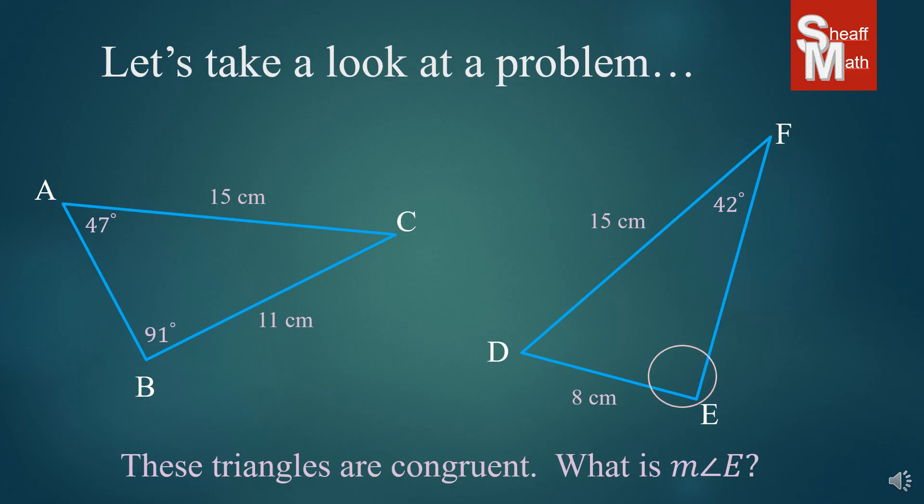So we're trying to find the measure of angle E. Now, some of you might just assume you can look at the other triangle and figure it out, and you may be correct. But you never want to trust your eyes in geometry. Always make sure mathematically that they are correct. So what I tell my students is, think of this as a puzzle, and you're going to find the missing parts first before you go on.